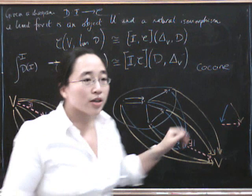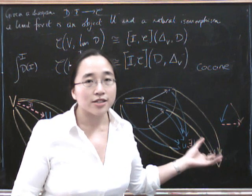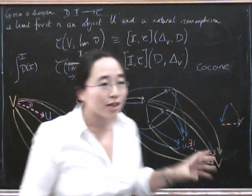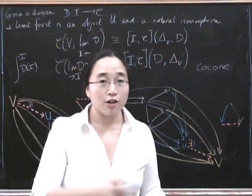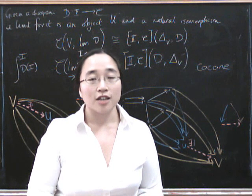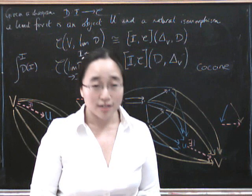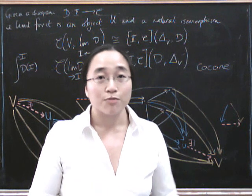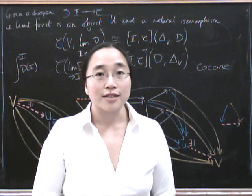Now, because co-limits in C are just limits in C op, in fact, terminal objects are just initial objects in the opposite category. So actually, we can push this one step further. And say that all limits and co-limits are just initial objects somewhere. And we can even sort of take the view that all universal properties are just initial objects somewhere.